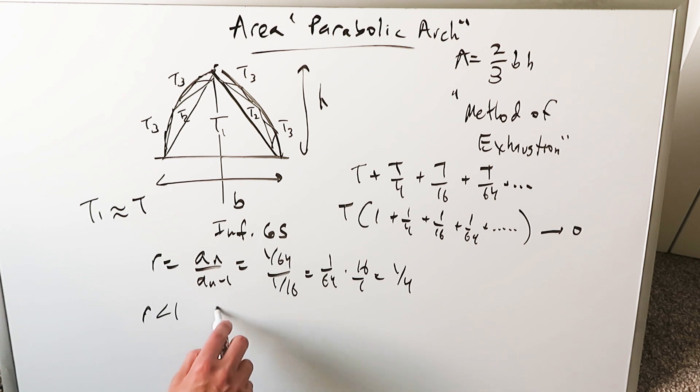If a common ratio is less than 1, you know you're looking at a geometric series that's convergent, therefore there must be a finite value coming out of this infinite geometric series.